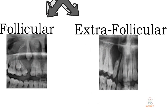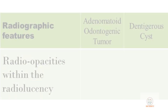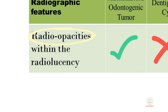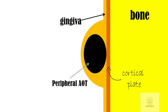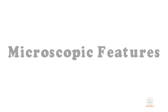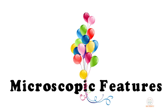In both types, the lesion causes divergence of roots or displacement of adjacent teeth. Few foci of radio-opacities may also be seen within these radiolucencies, suggestive of calcification within the tumor — this feature is very helpful in distinguishing AOT from a dentigerous cyst. In the peripheral type, no radiographic changes are seen except for slight thinning of the cortical plate.